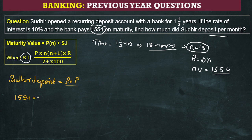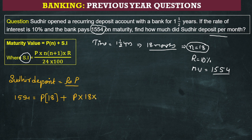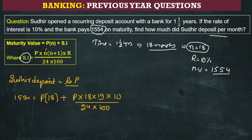So 1554 equals PN — the amount deposited per month is our P, N is the number of months which is 18. Plus the same principal into 18 into 19 — because N+1 means 18+1 = 19 — with rate 10% and division by 24 into 100.